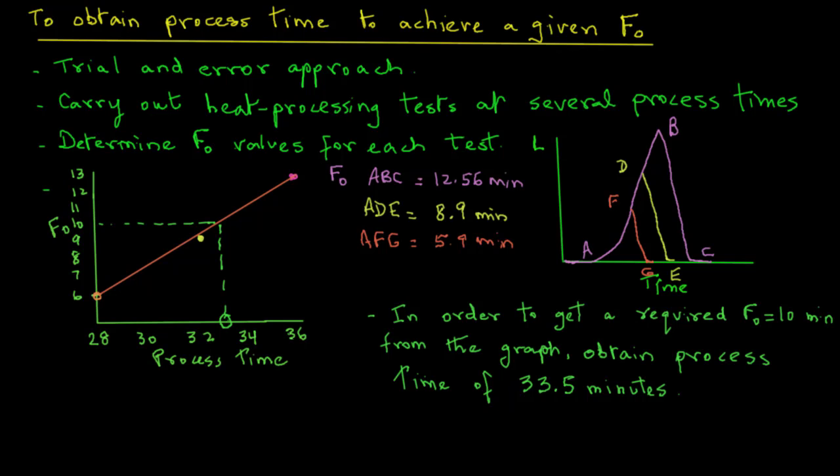So again, we can't determine the process time for a target F0 value except that you have to conduct additional experimental trials and use the procedure as we saw here. This concludes our discussion on the improved general method. As I had stated before, this is the most commonly used method, and you want to make sure that you have a good understanding of the various steps involved in determining lethality for a given process.